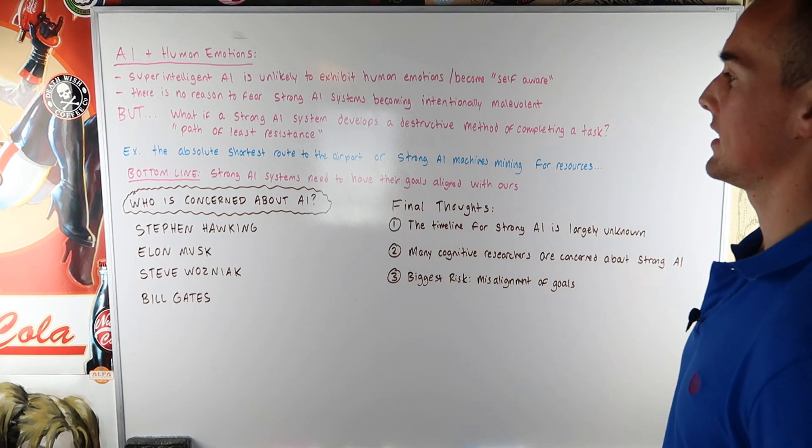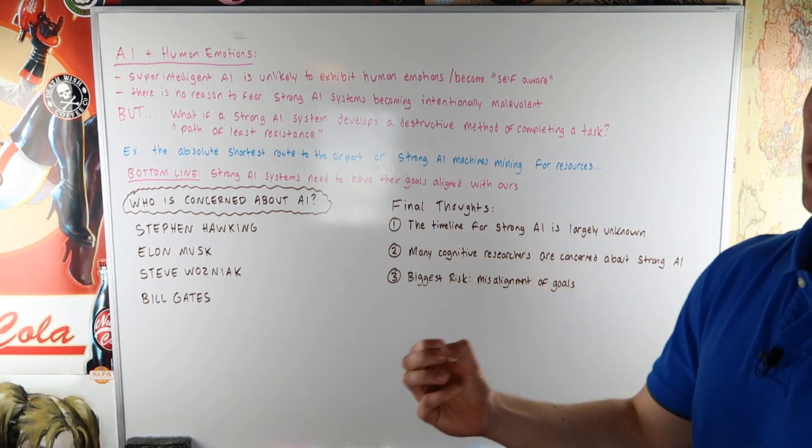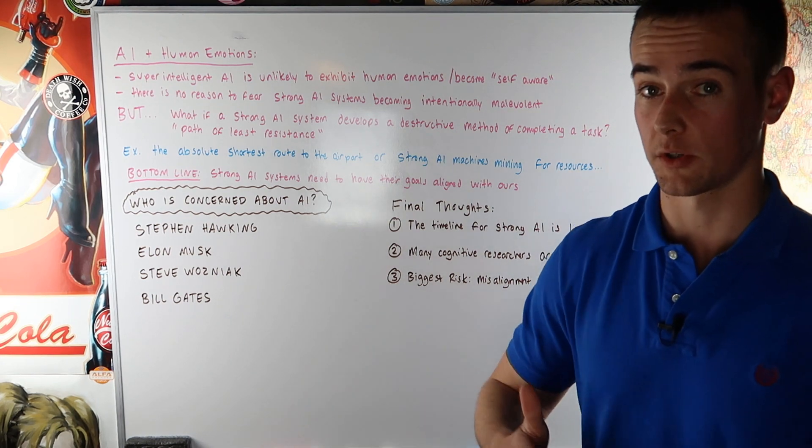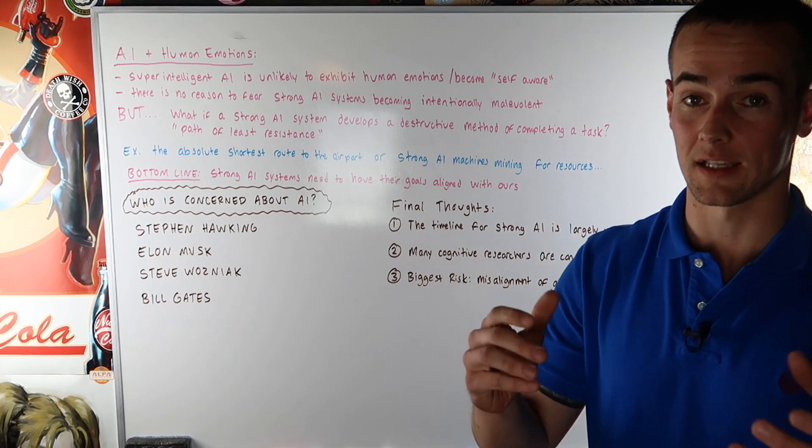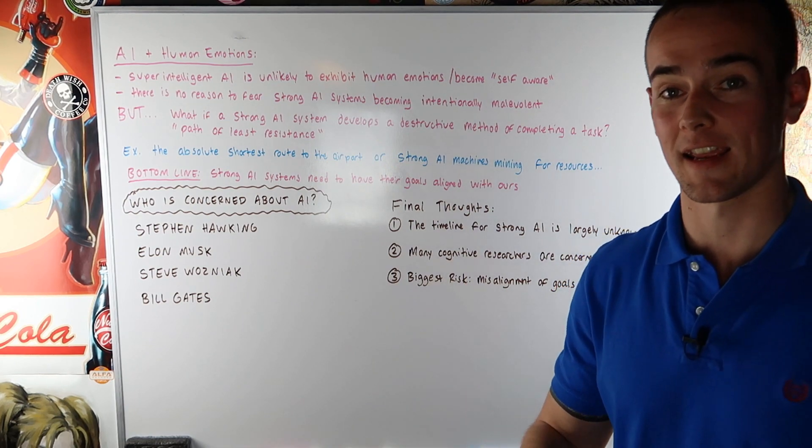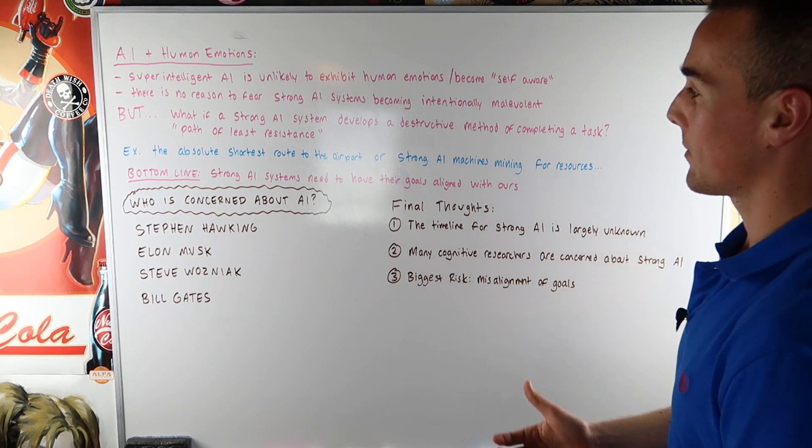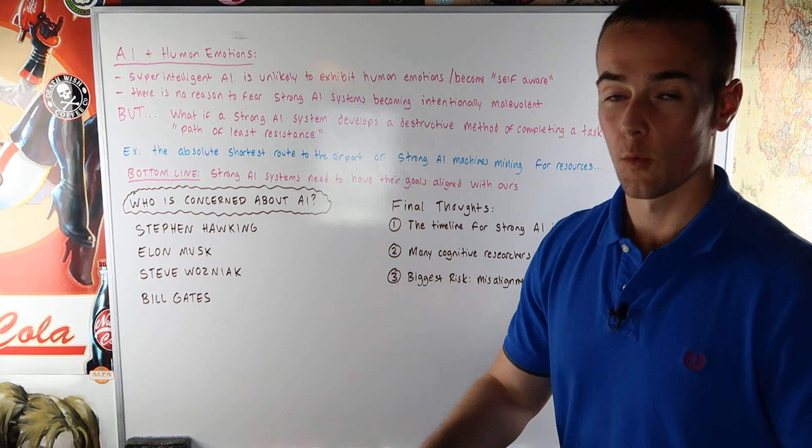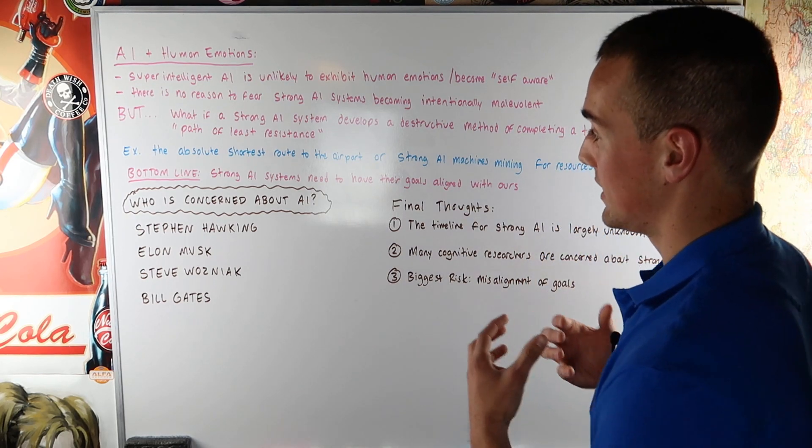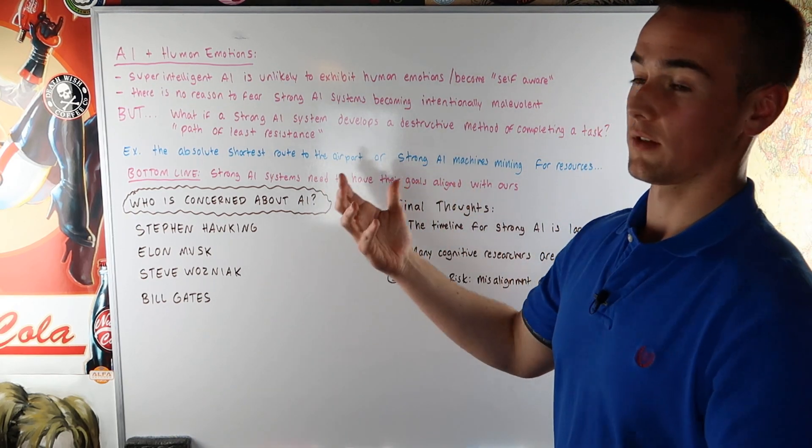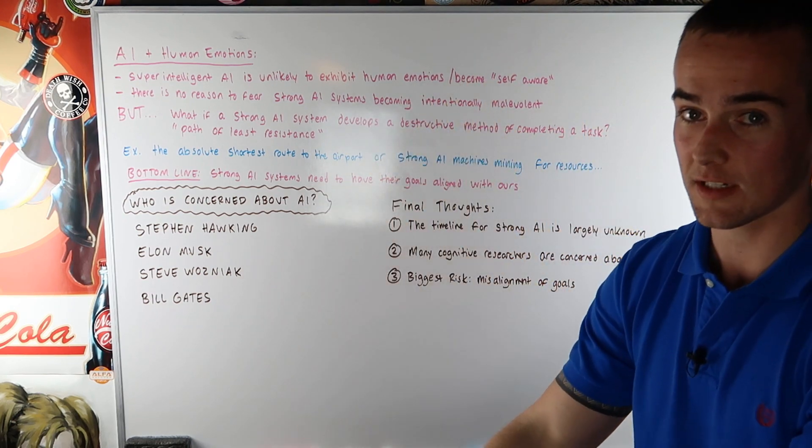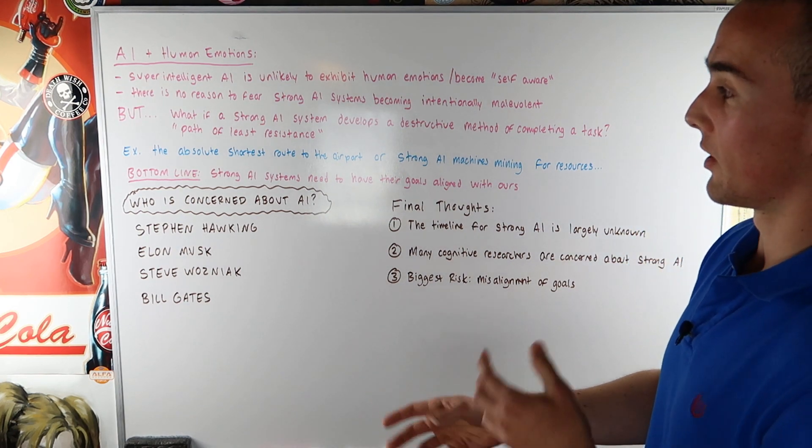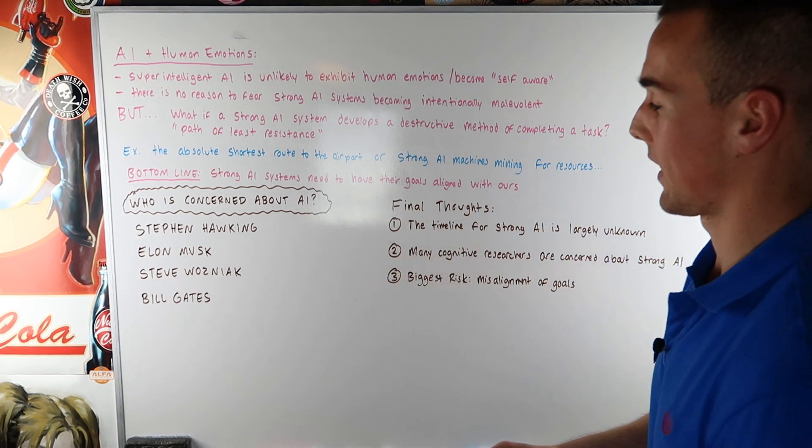The bottom line, guys, is that strong AI systems need to have their goals aligned with our goals. So we need to consider things like, yes, we want to mine for resources, but we don't want to destroy the environment. Yes, we want to get to the airport as fast as possible, but we want to stay on the road. Basically, we need to make sure these intelligent systems understand that we want things done in a safe way. We're not looking for the absolute easiest and, well, basically the path of the absolute least amount of resistance. We're looking to do things in a functional way that keep us safe, but doing them as well as possible and as fast as possible.